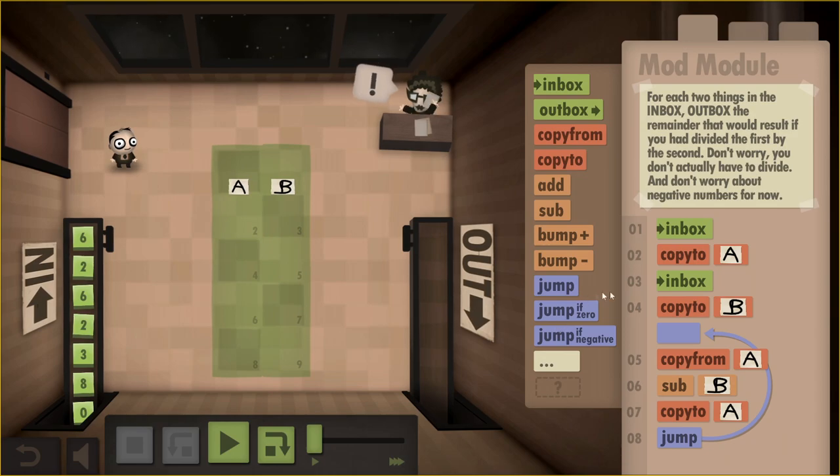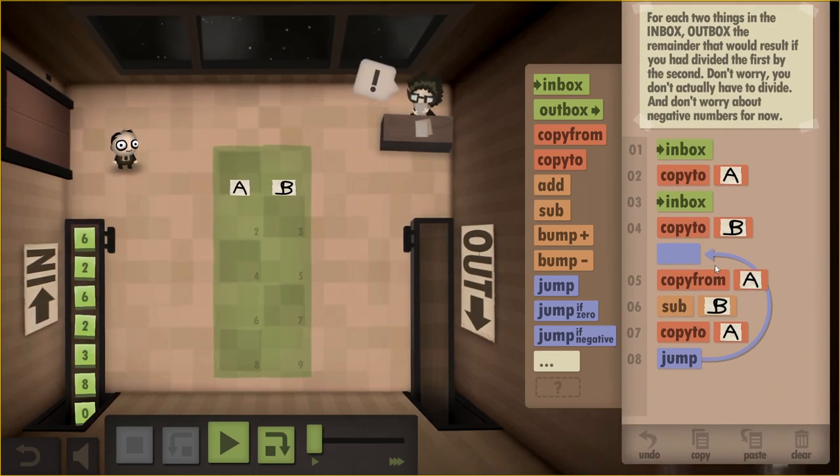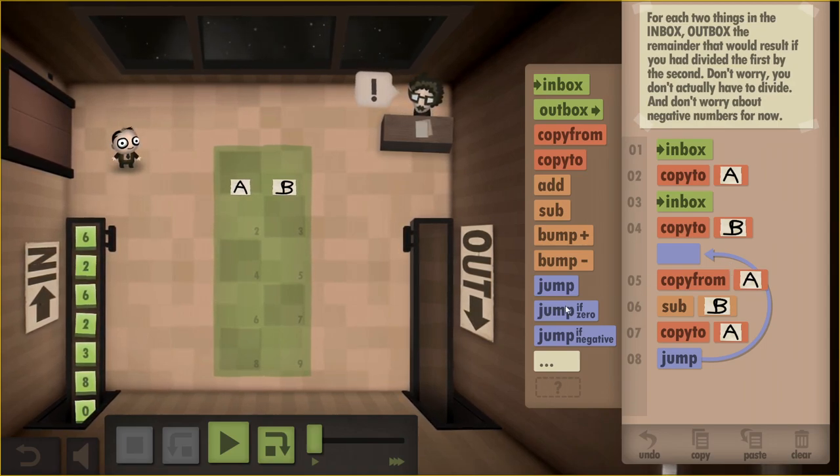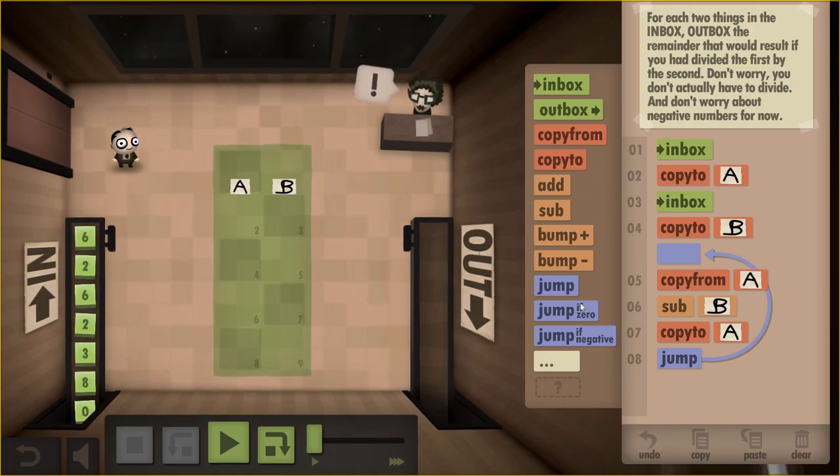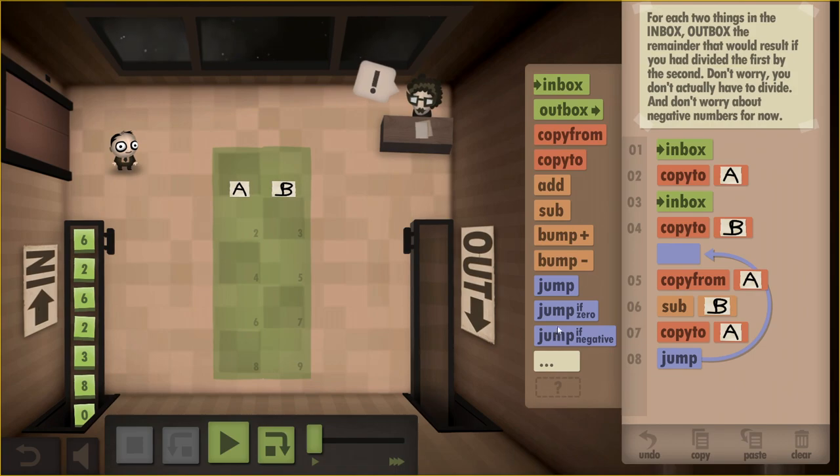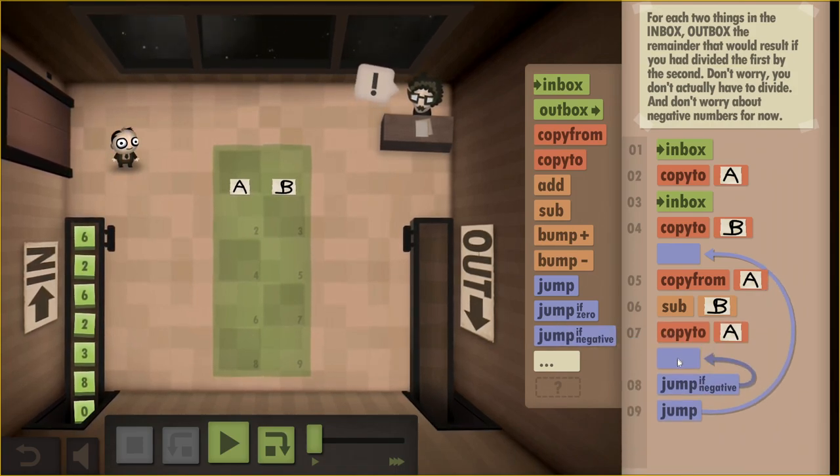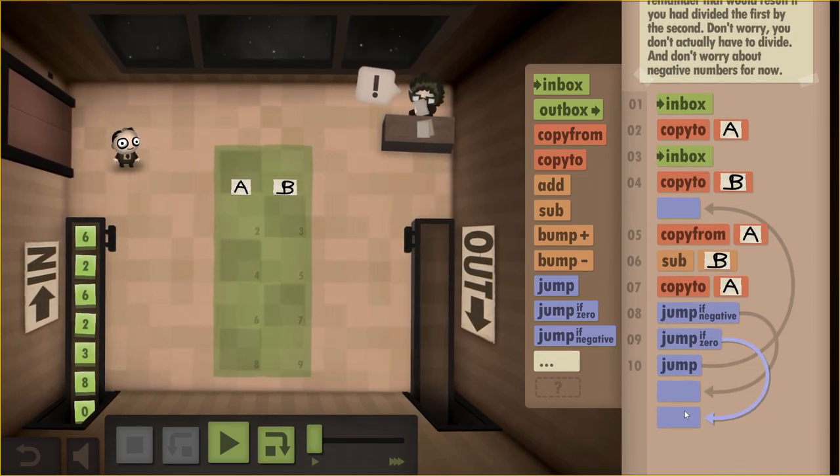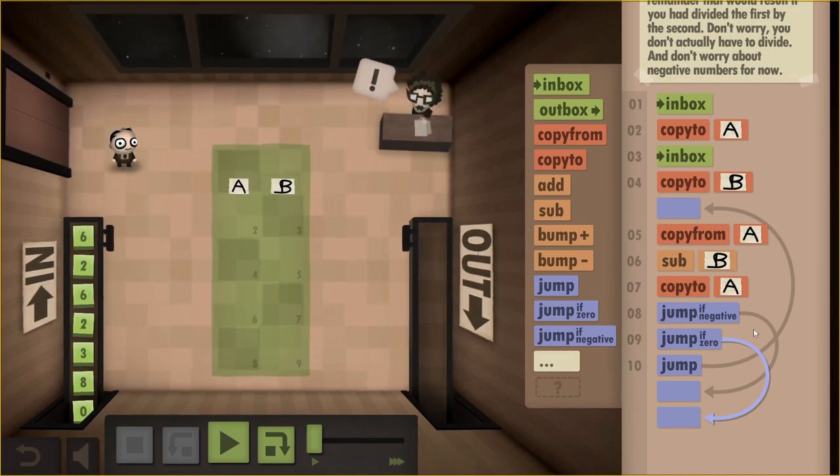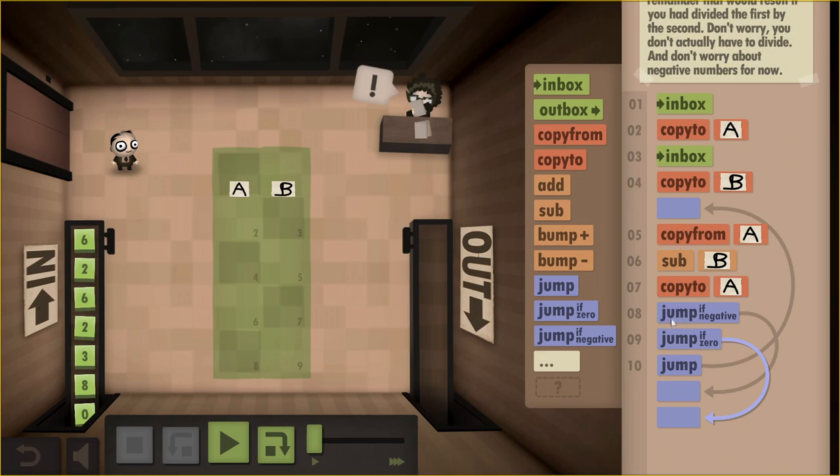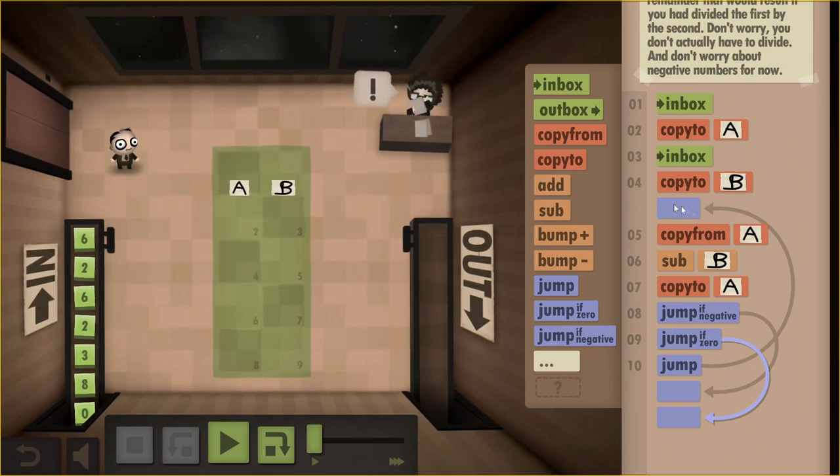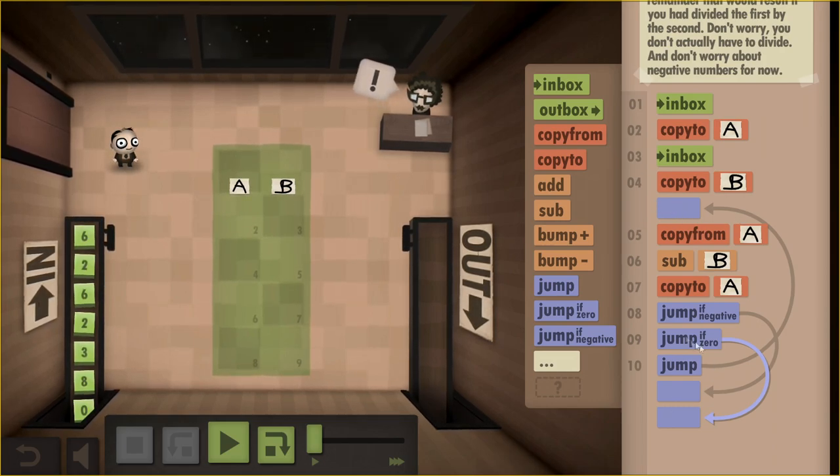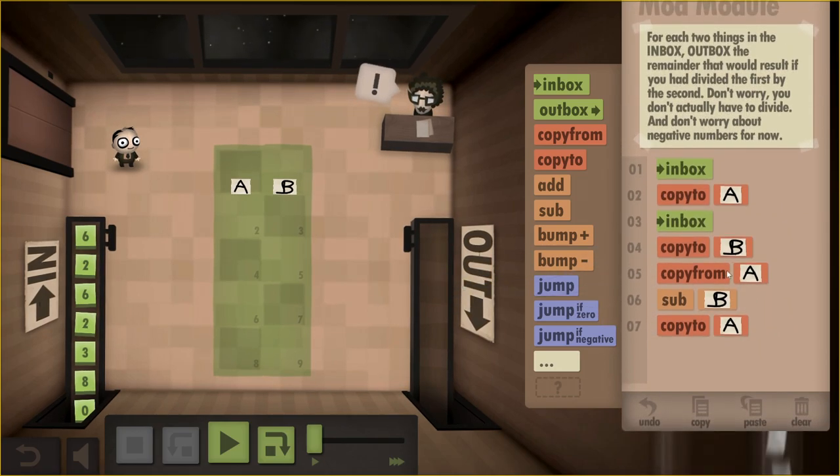Once we get a negative number, we know that we have a negative or zero, we'll know that we've reached the end of the loop condition. So let's see, we want to subtract, we want to pick up A and subtract B from it. So copy from A and subtract B.